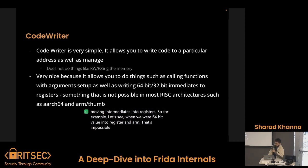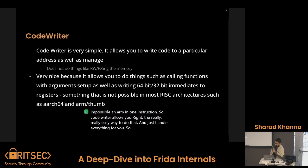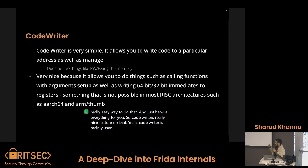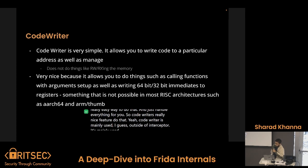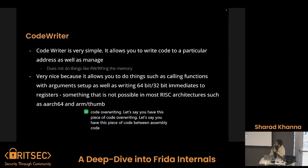Code Writer provides a really easy way to do things you otherwise can't do in one instruction — stuff like moving immediates into registers. For example, let's say you want to move a 64-bit value into a register in ARM — that's impossible in ARM in one instruction. Code Writer provides a really easy way to do that and just handles everything for you. Code Writer is mainly used for code overwriting — let's say you have a piece of code you just need to patch: Code Writer will allow you to patch it very easily.